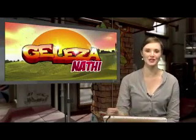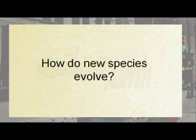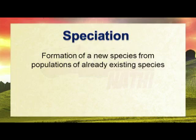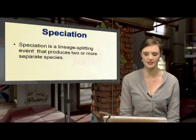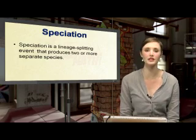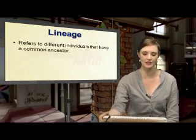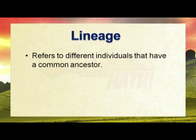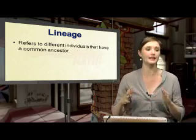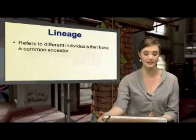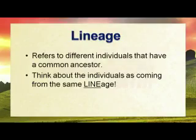Thanks for that question. How do new species evolve? Well, they do this by a process called speciation, which is the formation of a new species from populations of already existing species. Speciation is the lineage splitting event that produces two or more separate species. Now, very important, before we get into speciation as such, it is important that you understand the definition of the word lineage. So what is lineage? Lineage refers to different individuals that have a common ancestor.